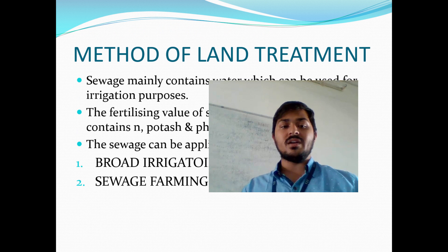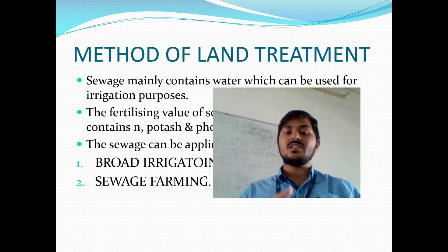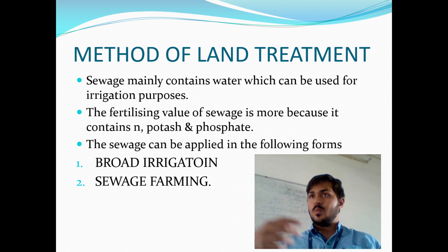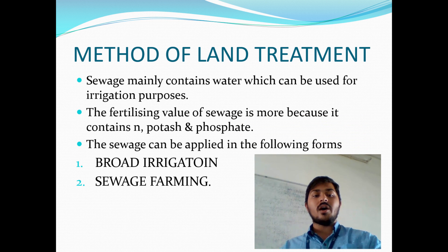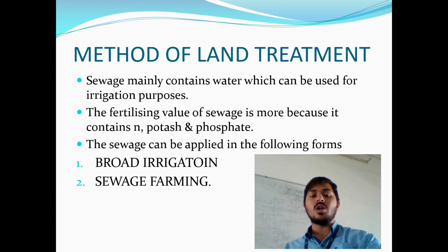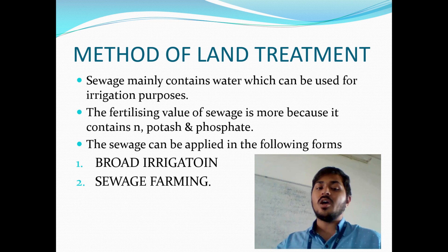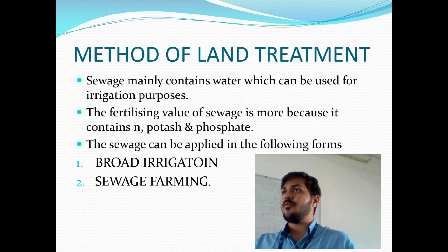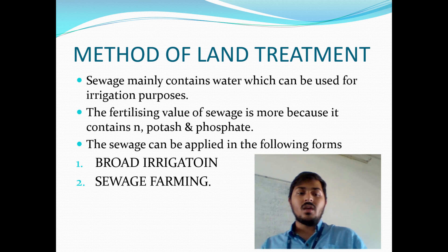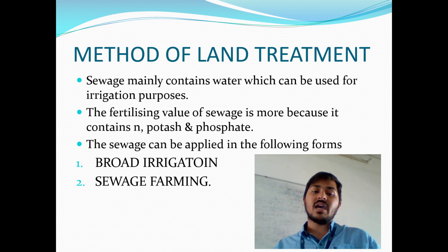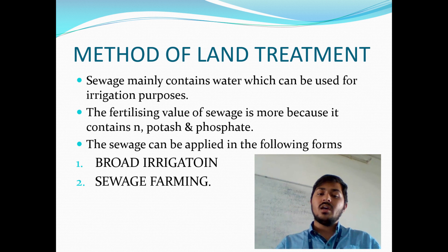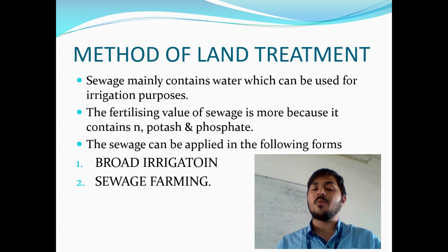The methods of land treatment: sewage mainly contains water which can be used for irrigation. The fertilizing value is high because it contains nitrogen, potassium and phosphate. The sewage can be applied in the following forms: broad irrigation and sewage farming.